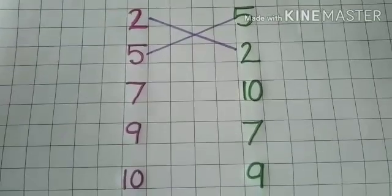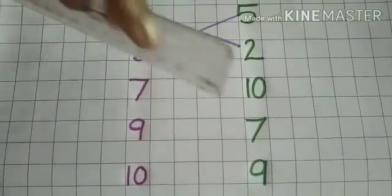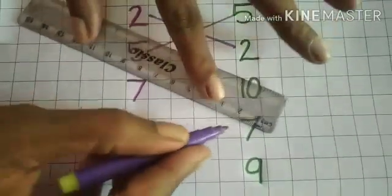Next is 7. You have to match 7 by 7. Same number. Where is 7? Yes, this is 7.